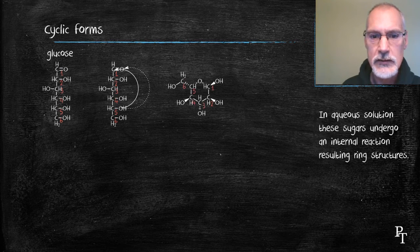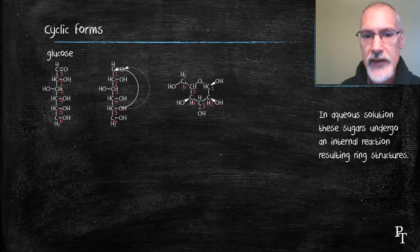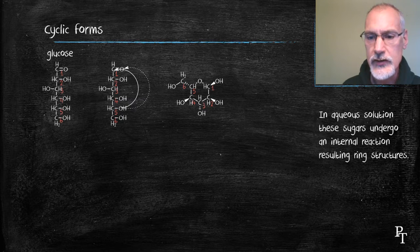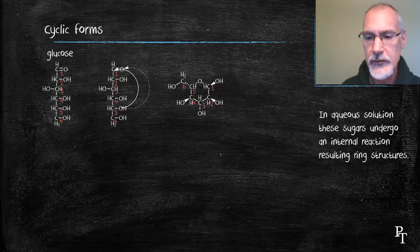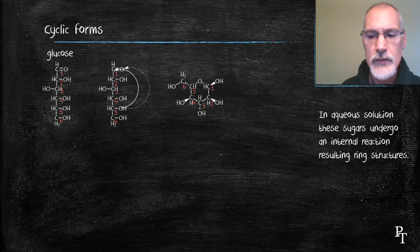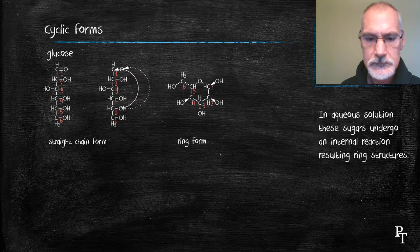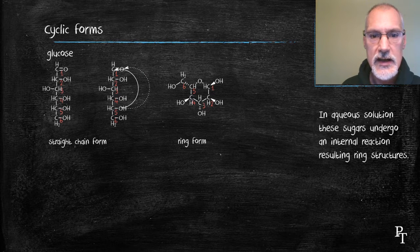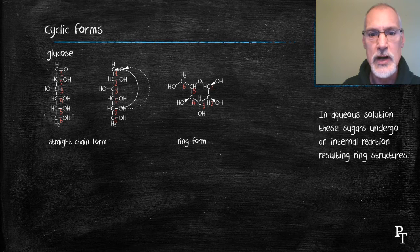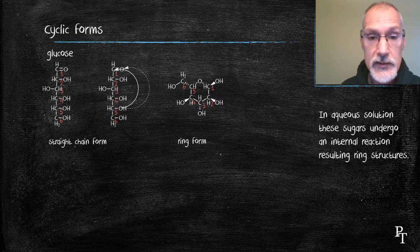That then creates a pentagonal ring in the center, sorry, a hexagonal ring in the center, with oxygen at one of those locations, and a branch coming off at carbon number six. So I've created here the ring structure. To notice in the diagram you'll see solid and hash line marks to indicate the bonds coming out of the page or into the page.